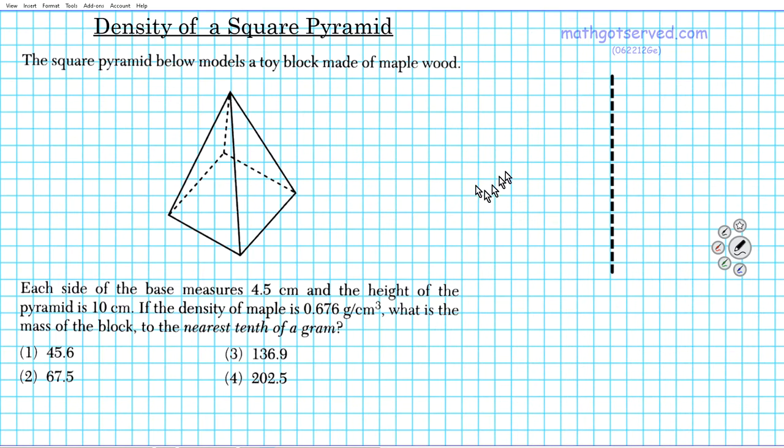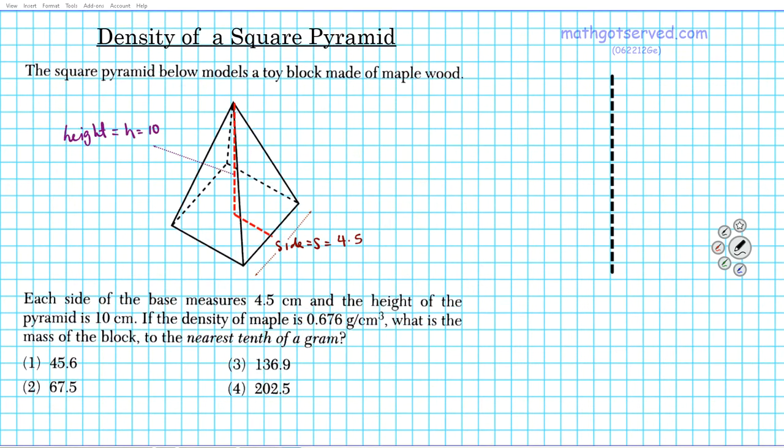So what we're going to do first is populate this diagram that we have right here with the measures that are given. We can see that the height right here is 90 degrees. The height is 10 units and the side length is 4.5.